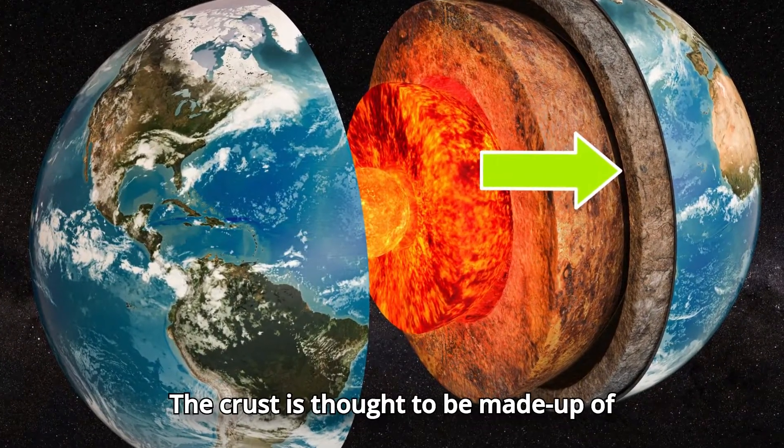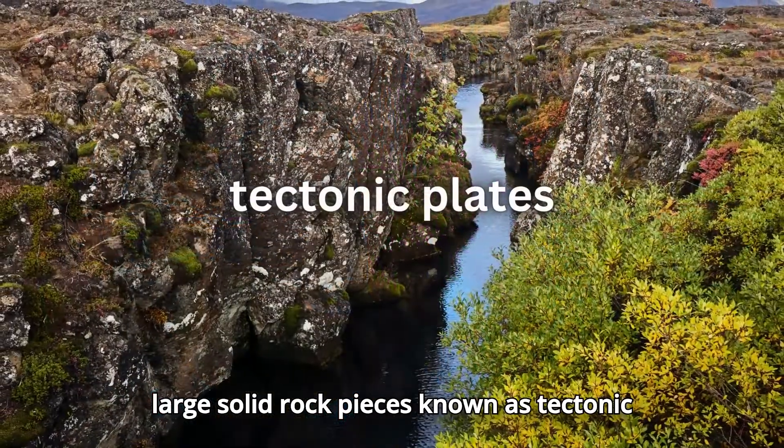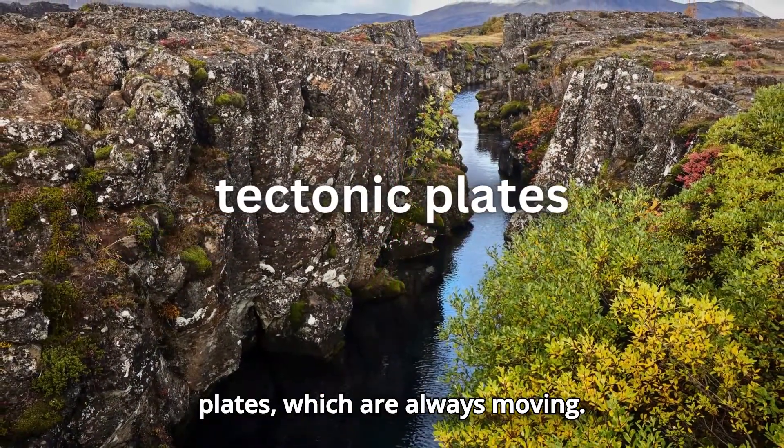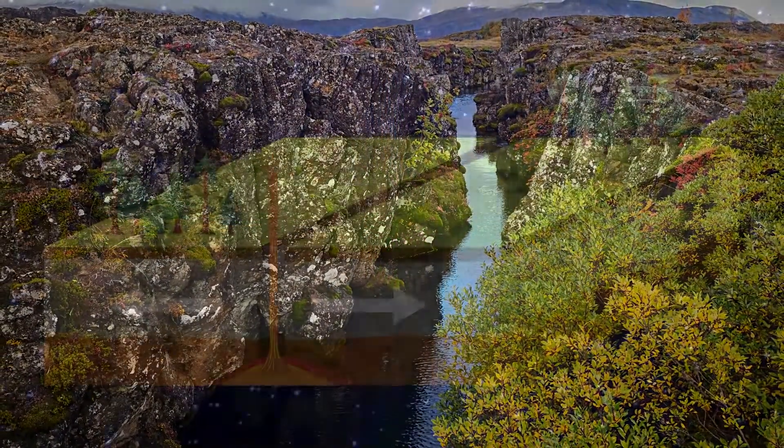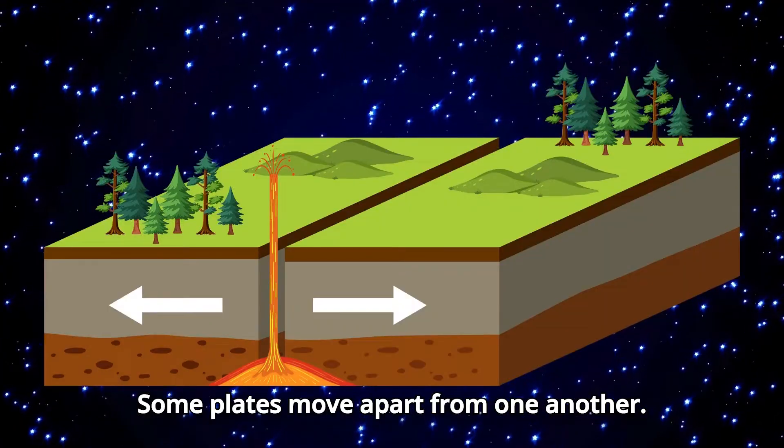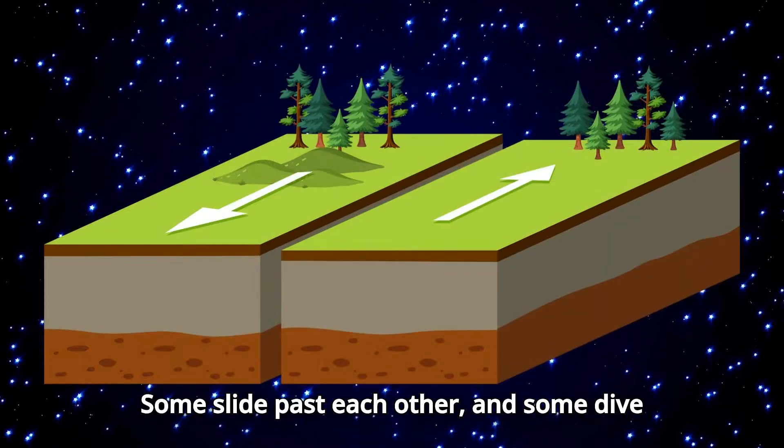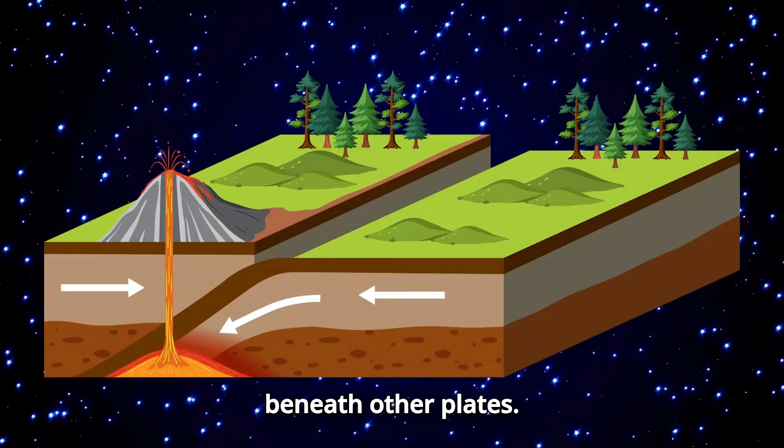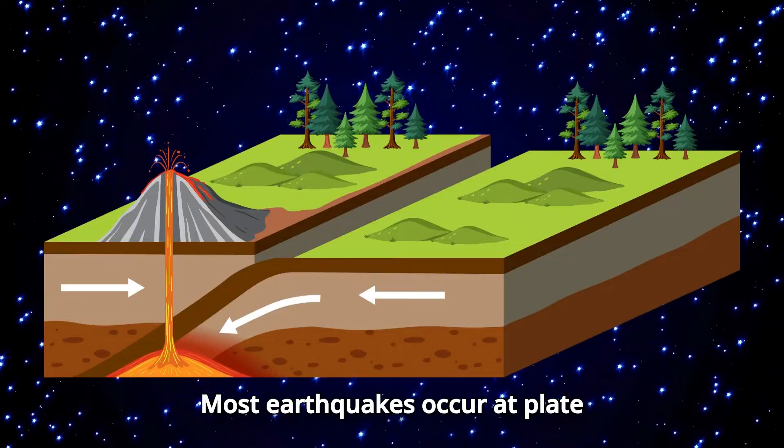The crust is thought to be made up of large, solid rock pieces known as tectonic plates which are always moving. Some plates move apart from one another, some slide past each other, and some dive beneath other plates. Most earthquakes occur at plate boundaries.